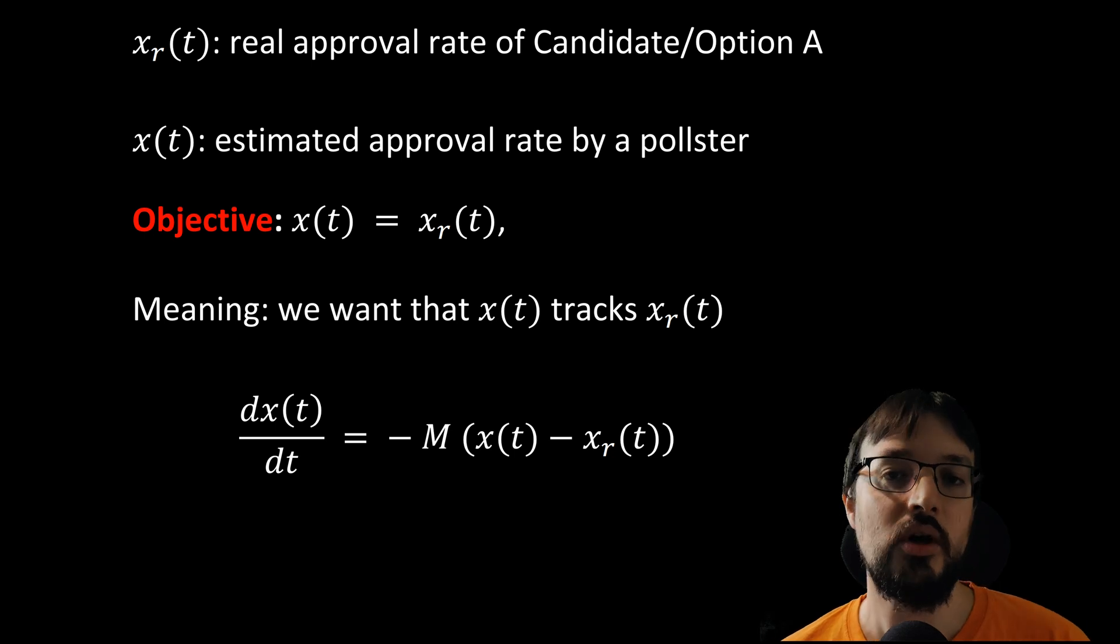So how do we model this? The simplest model that we can construct is the following: dx/dt equal to minus M times (x(t) minus x_r(t)). What does this mean?